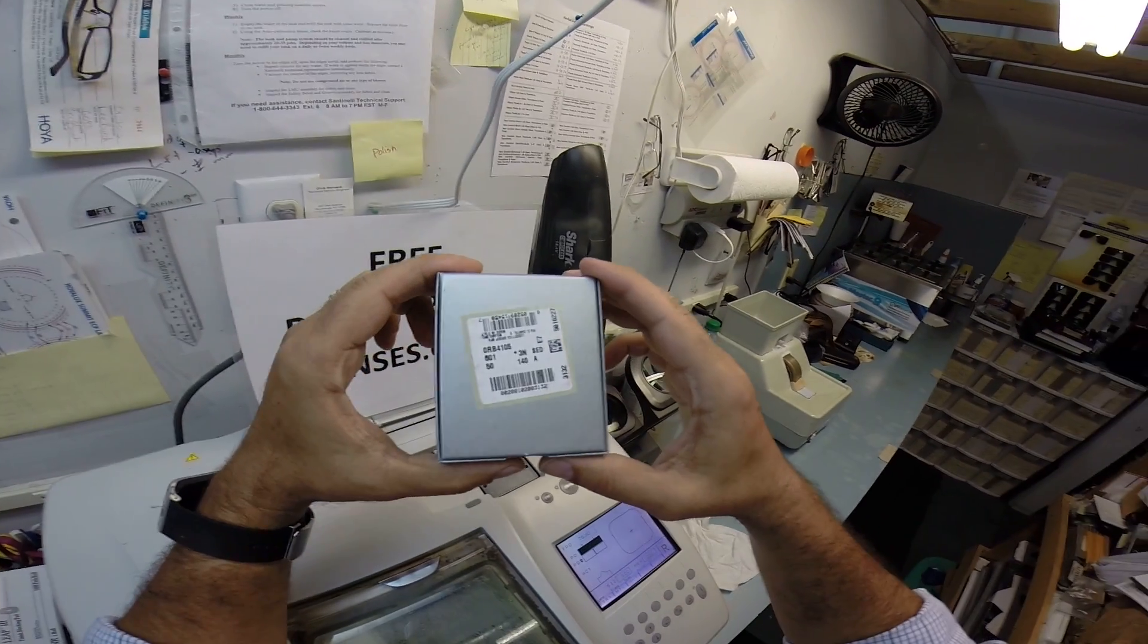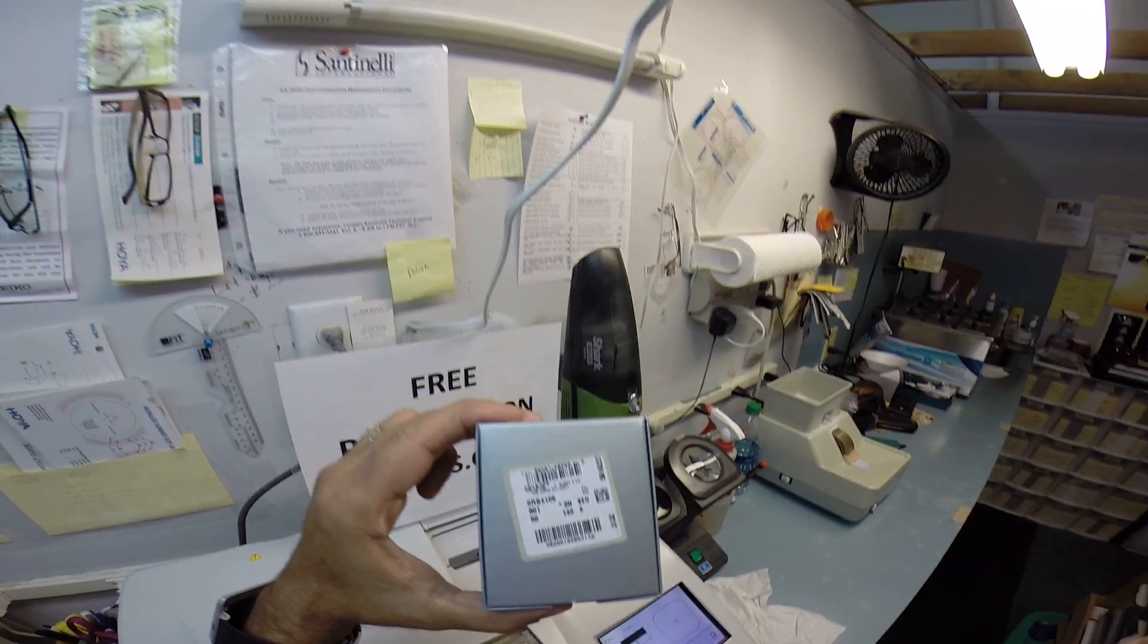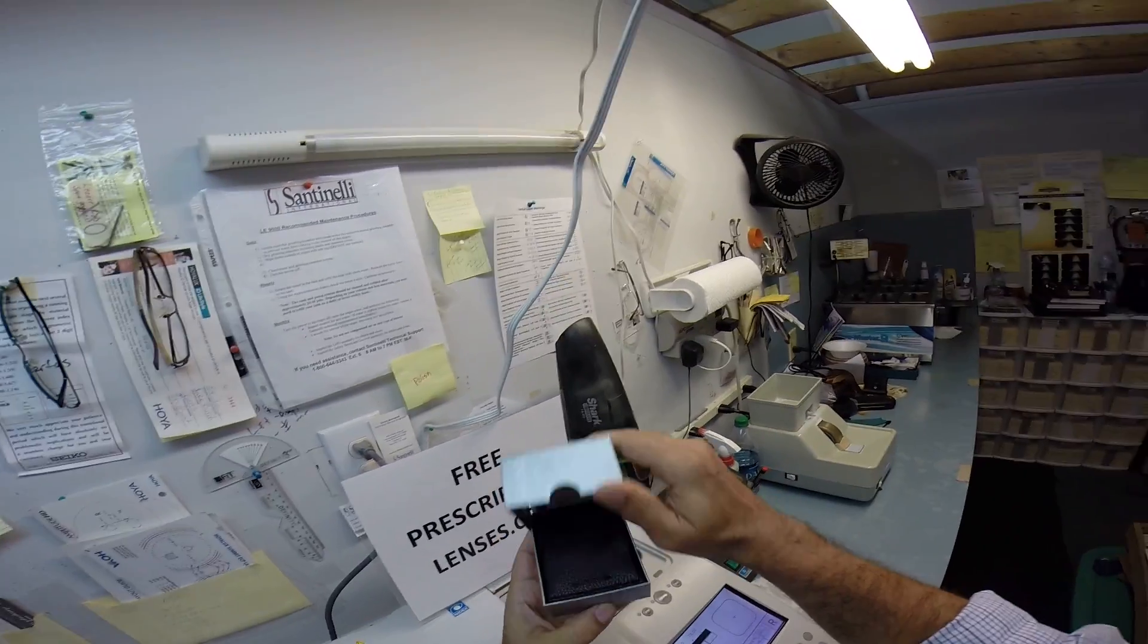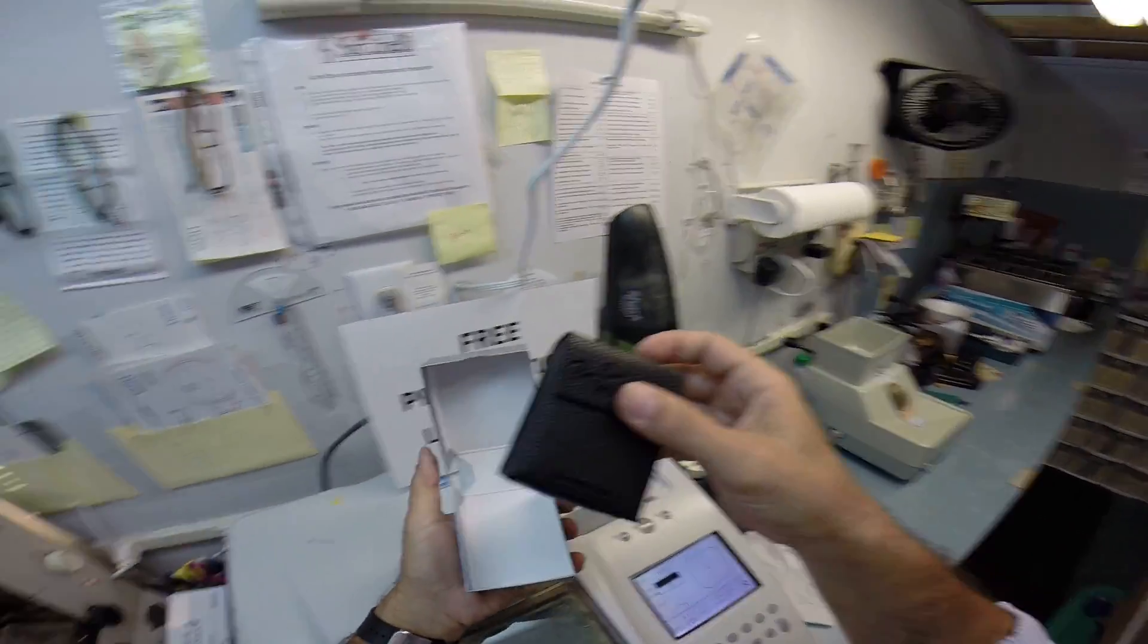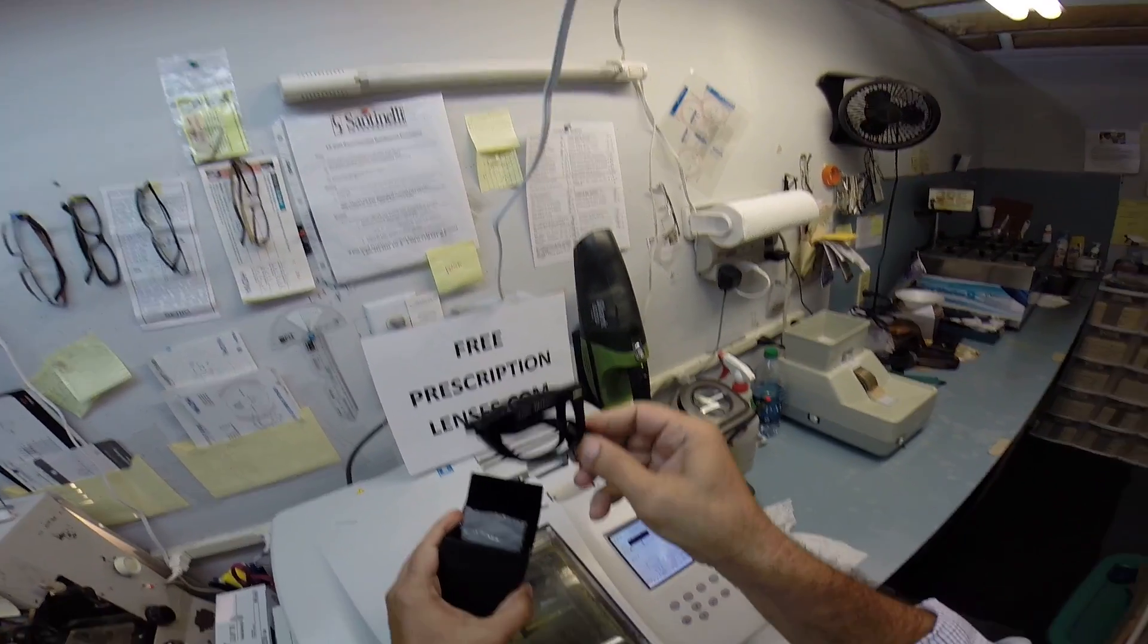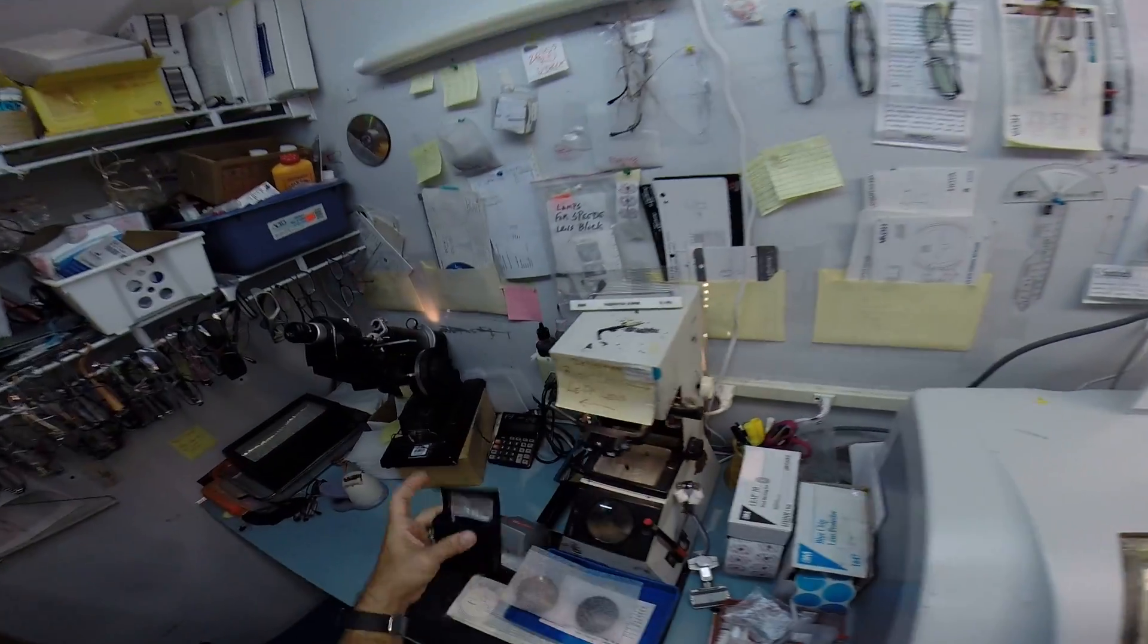There's only one frame that can be in here and that is the 4105 Folding Wayfarer, color 601 in the 50 eye size. And believe it or not, Randall, this came in this cute little case. Let me take it out. Of course, your Folding Wayfarer, your Ray-Ban cleaning cloth and your Ray-Ban case.